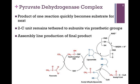In this complex of enzymes, illustrated at the bottom right of our slide, the product of one reaction quickly becomes the substrate for the next. So although it looks very complex, it occurs very rapidly. The two-carbon unit that is generated actually remains tethered to the subunits through prosthetic groups that are part of each of these enzyme complexes. The two-carbon unit gets passed from prosthetic group to prosthetic group until we form that final product, acetyl-CoA.